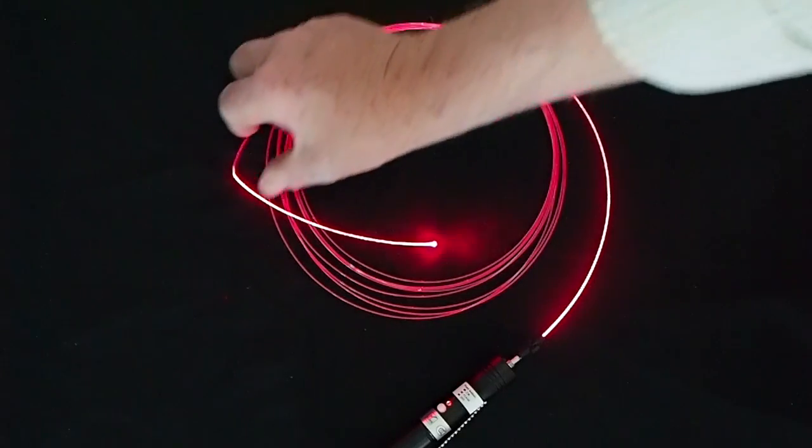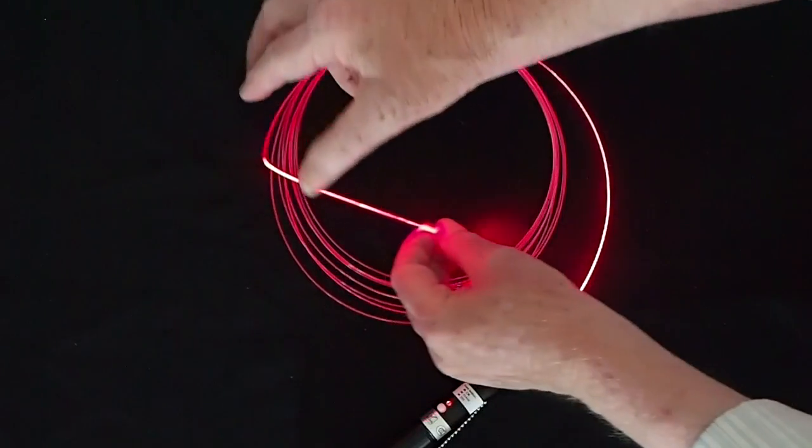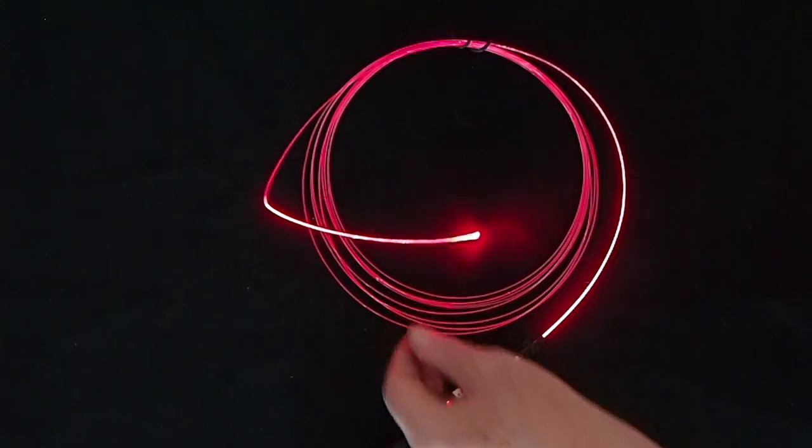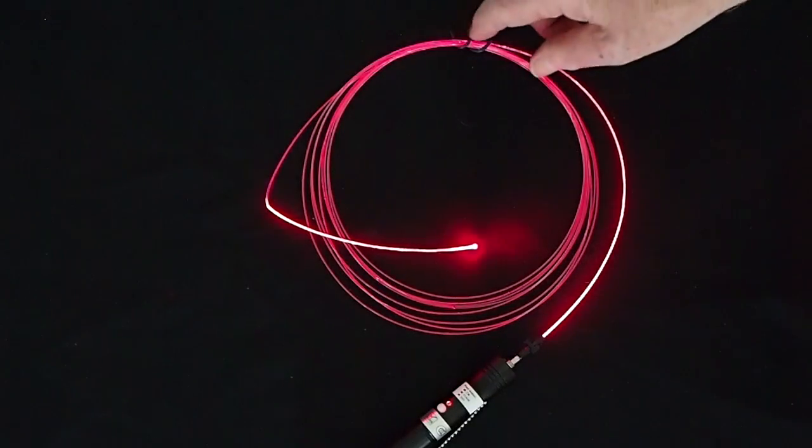When we bend the fiber, we cause the light to be lost in the fiber. So you can see the light coupled into the fiber, transmitted through the fiber, down to the end.